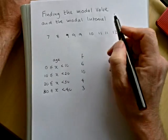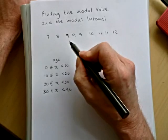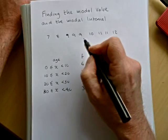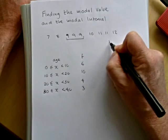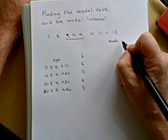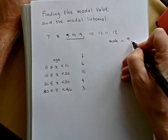So the modal value, or the mode, will be the number that is the most frequent. And we can see that nine has come up the most times. So the mode, or modal value, is nine from that list.